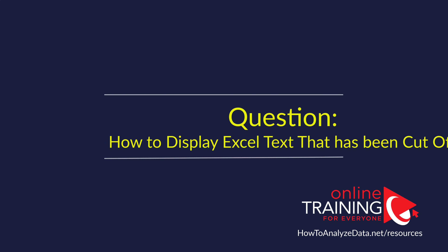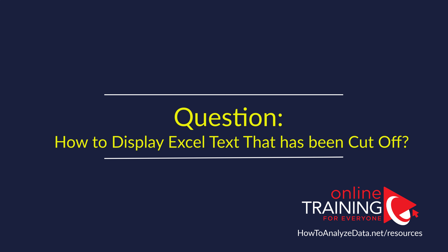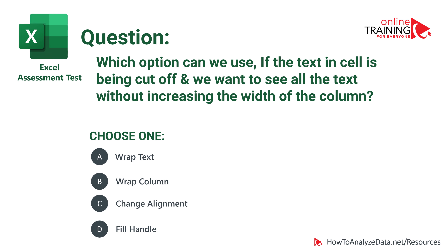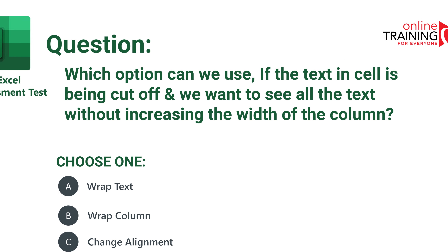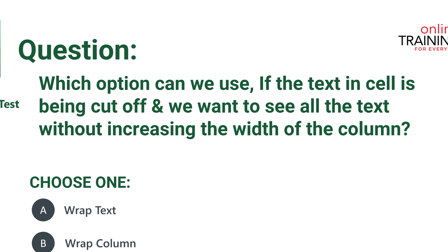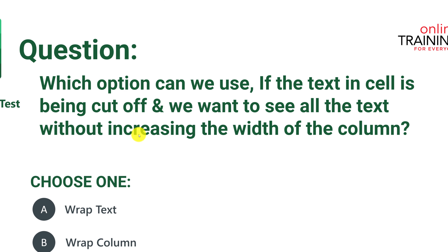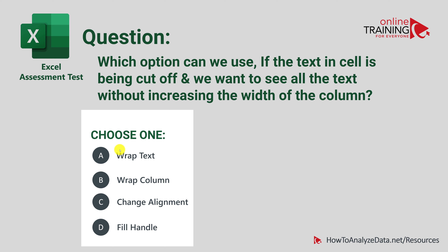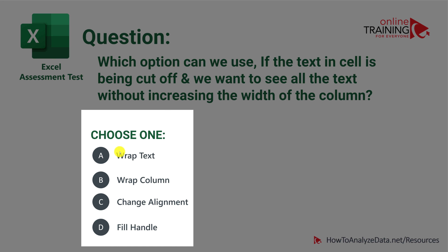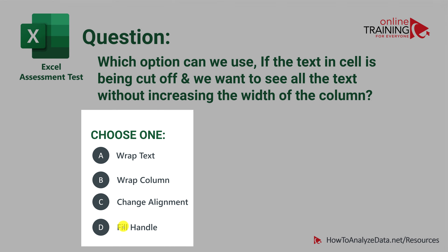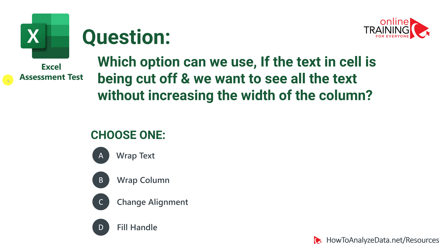Hope you got that one right. Now let's look at a typical question testing your knowledge of Excel formatting features. Which option can be used if the text in a cell is being cut off and you want to see all the text without increasing the width of the column? The four choices are: wrap text, wrap column, change alignment, and fill handle.